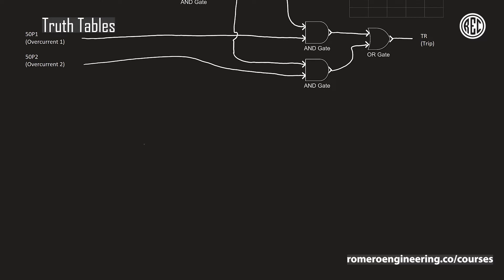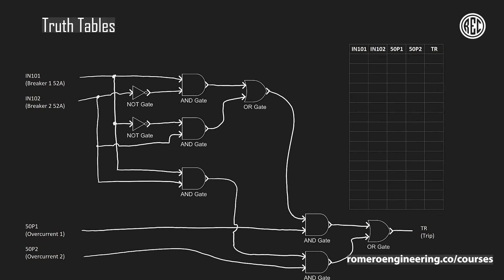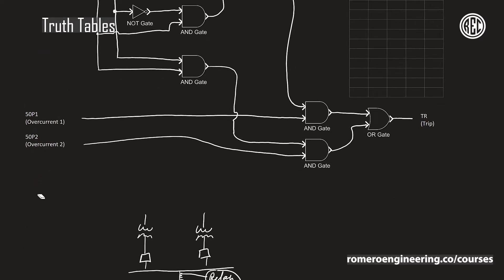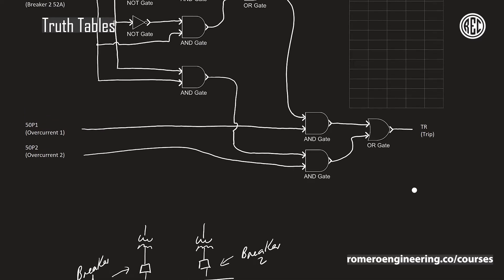This could be an example of a distribution substation where you have two sources — two transformers, each one with its low-side breaker — that connect to a bus, with a feeder and a relay. What I want to do with this example is say: whenever both breakers are closed — both transformer breakers — I want to enable overcurrent element 50P2. So whenever both transformer breaker one and breaker two are closed, I want to enable 50P2.